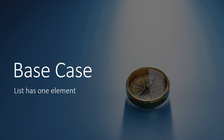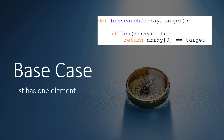First we have to think of the base case. Our recursion, like our iteration, will stop when the list has been cut down to one element. The list is called 'array' and the search term is called 'target', so if the length of the array is only one, we compare that one remaining item to the target and return that value. That is the base case — we've reduced the list to a single item and return the boolean comparison to the main program.